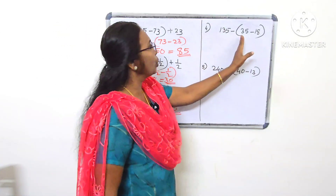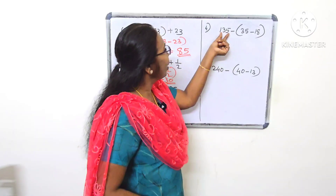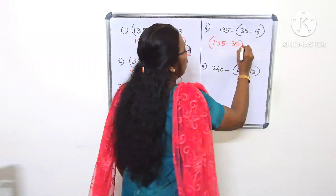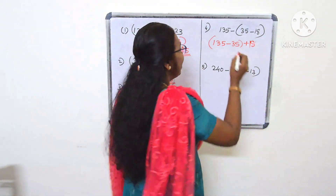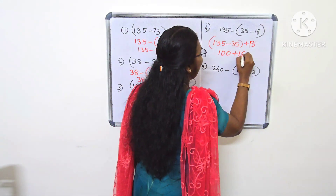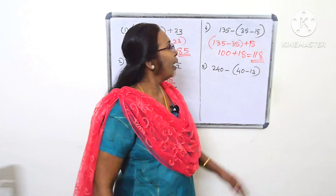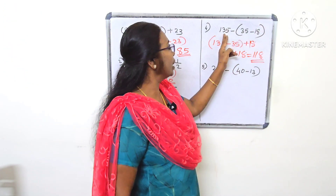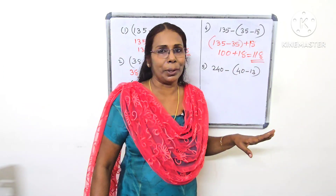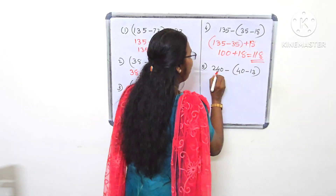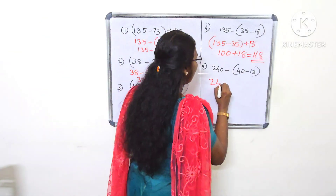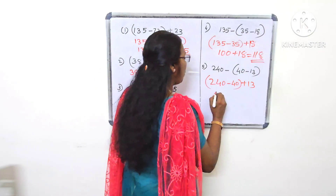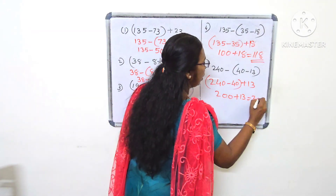Now let's take a look. We can take some of these items. This item is 9, this item is 8. It will be difficult to add step by step. Here it is plus 10. What we do is add step by step, continuing the addition process.